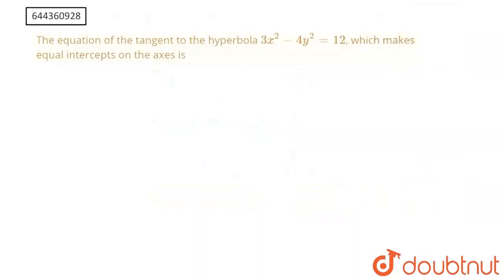The question says: find the equation of the tangent to the hyperbola 3x² minus 4y² = 12, which makes equal intercepts to the axes.